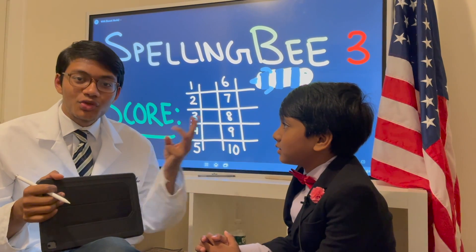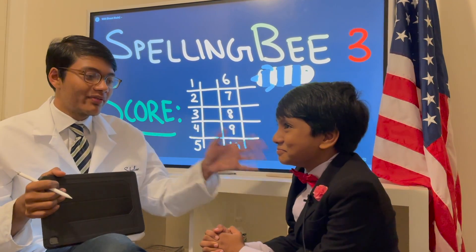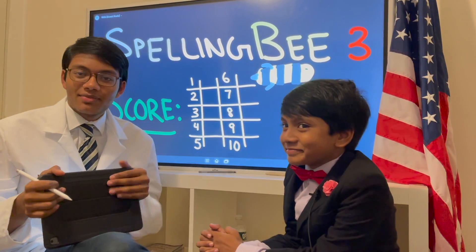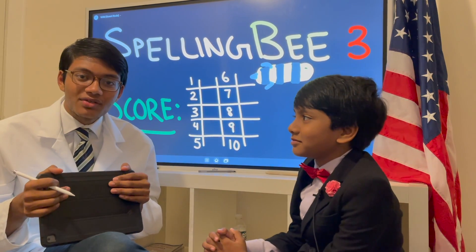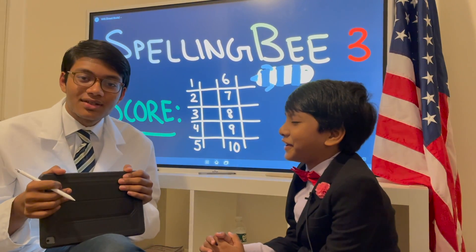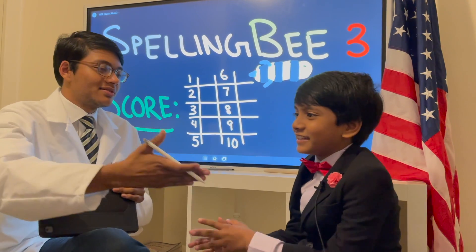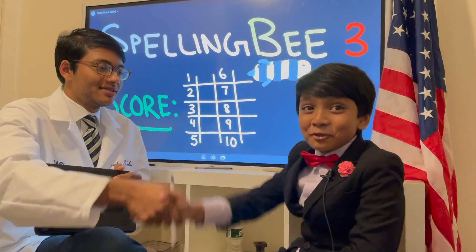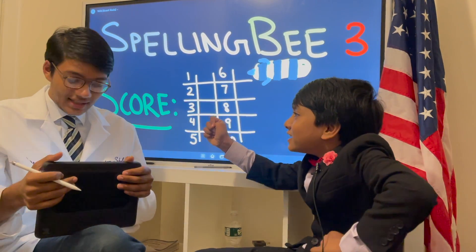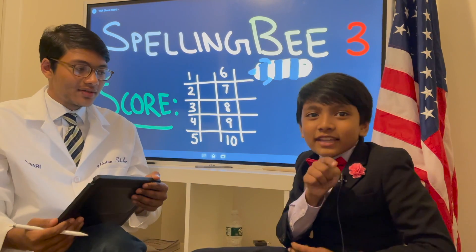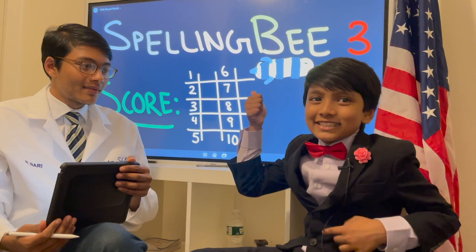Welcome to Spelling Bee round 3. Here's our contestant, Professor Soborno Isaac Barry. He successfully passed the first two rounds, and let's see how well he does on the third round. Are you ready, Professor? Yes, I actually don't know, and I hope this is hard. Fight me! I need 90 or higher to advance to the next level.